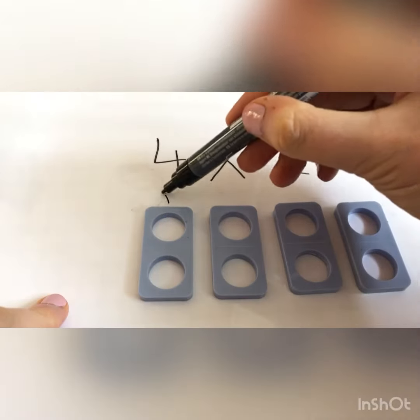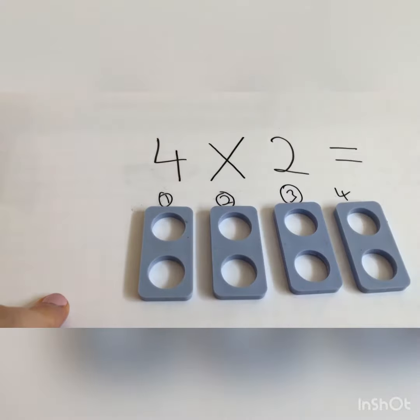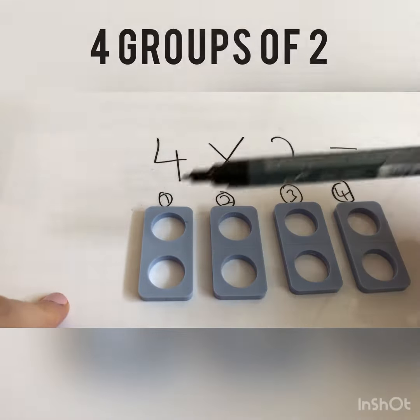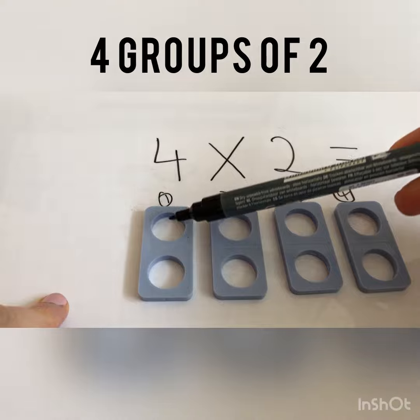I'm going to write in my groups. Group one, group two, group three and group four. Now I'm going to check it. Have I got four groups? Yes, I have. Have I got two in each group? Yes, I have.